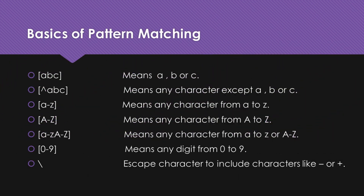To begin, let's talk about character classes. In regular expressions, square brackets are used to define a character class, which represents a set of characters that can match a particular position in a string. For example, the expression [ABC] means that we're looking for a match with either the character A, B, or C. So if we have a string containing any of these characters, it will be considered a match.